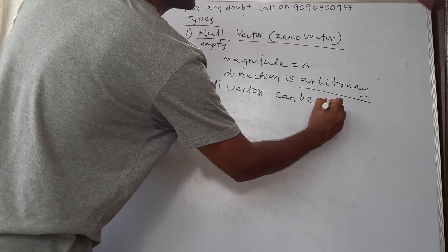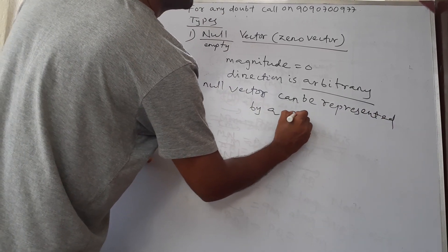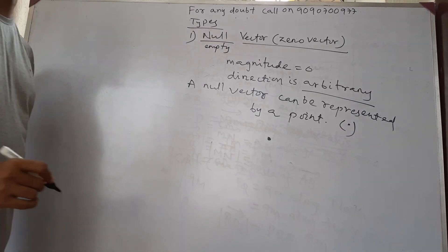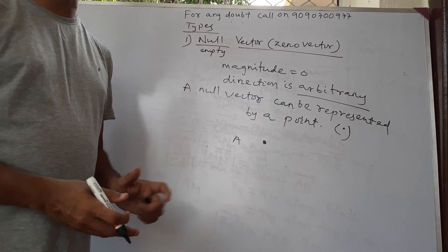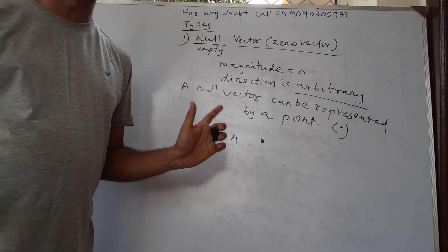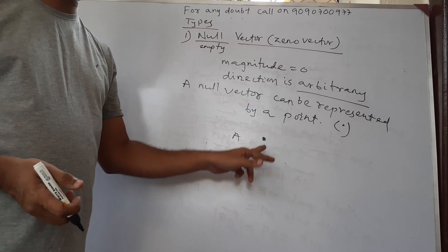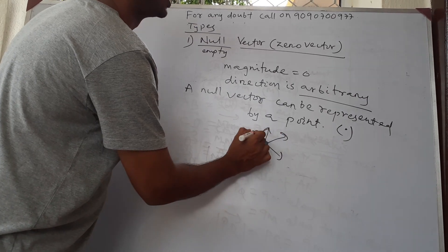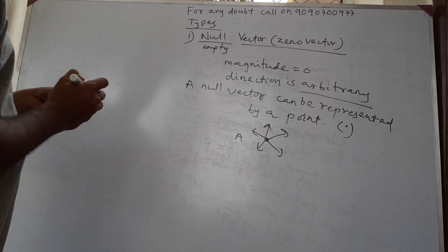Arbitrary means the direction can be anything — here and there. A null vector can be represented by a point. Because if A is a point, you have never measured the length, width, radius, perimeter, area, or volume of a point — it is negligibly small. So we can assume the magnitude is zero, and the direction is not fixed, so a null vector can be represented by a point.